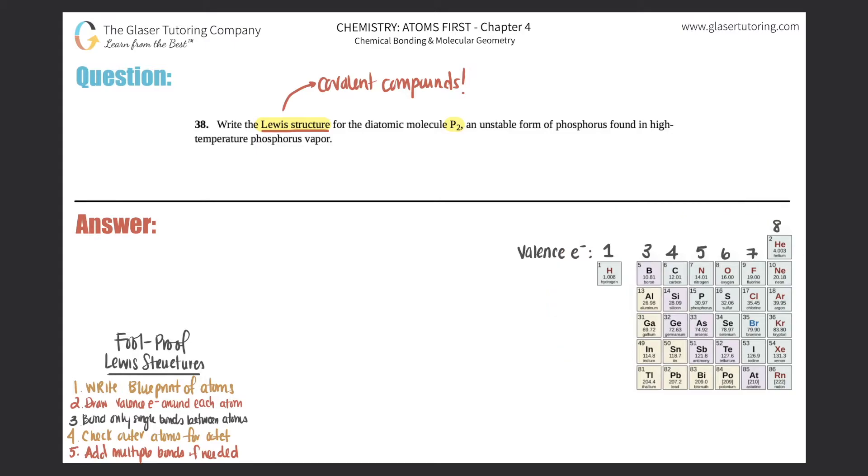Now I also want to say that a lot of teachers and professors may teach Lewis structures differently. There really is no proper way of learning Lewis structures. It's just what makes it simple for you to understand. So over the years, I have found a foolproof Lewis structure method that works majority of the time and it's very simple. So I'm going to always teach my Lewis structures like this. If you do this method on your tests and quizzes, your teacher or professor should accept this way, but I would always just double check.